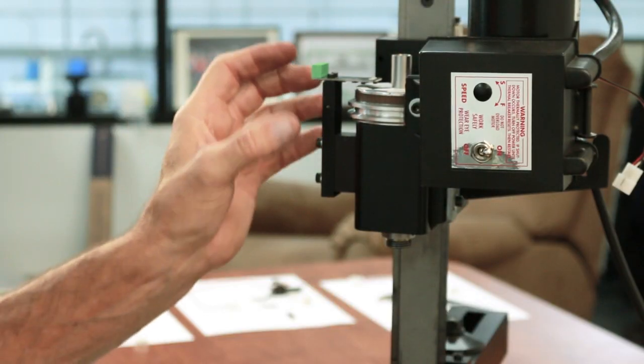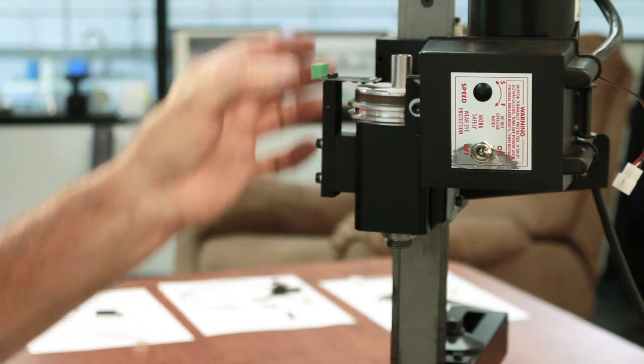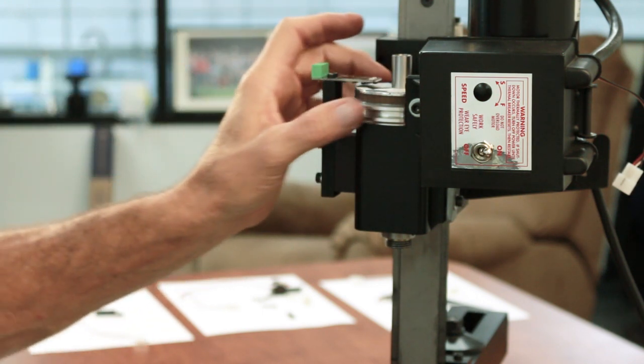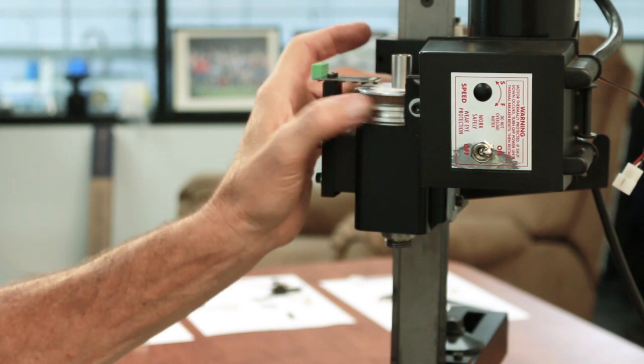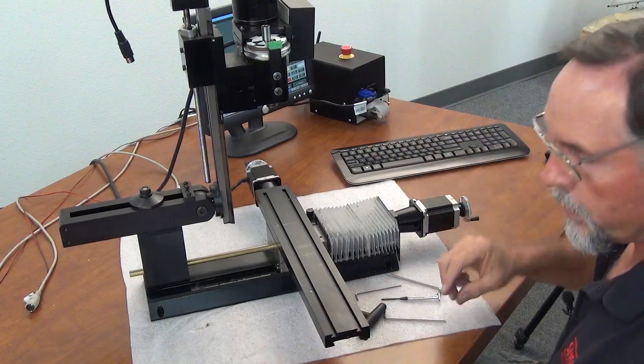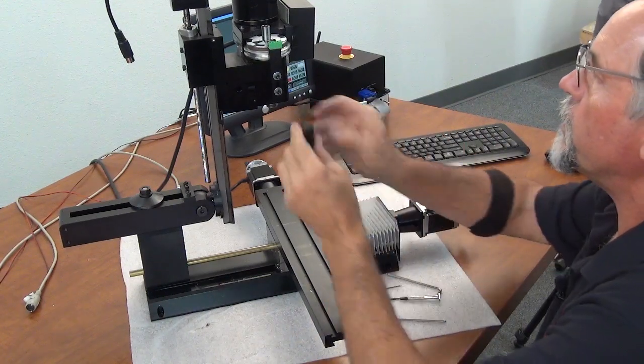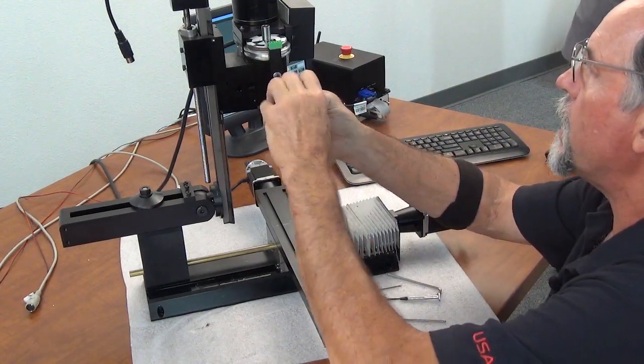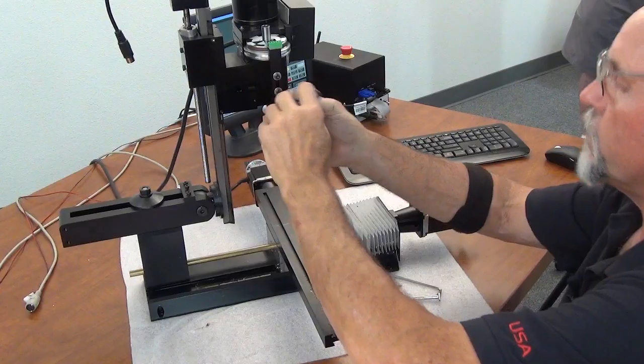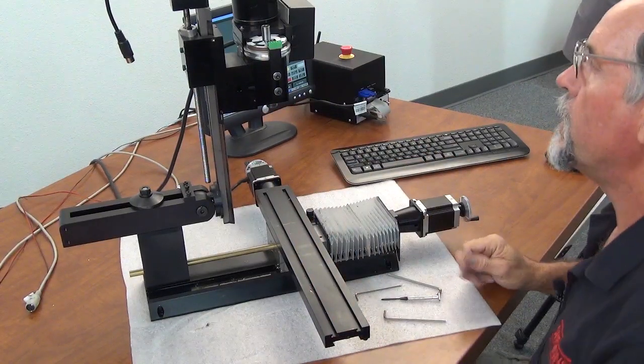So when you press down with your finger, you're getting it aligned this way, this way, and in and out. So we're nice and square. And that gap right there is what we need to read the label correctly. Once I know the gap is set right, which it is, then I'm going to lock these down. So we snug up on both of them. They're getting snug.